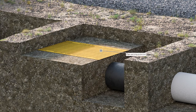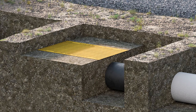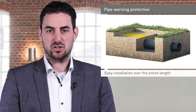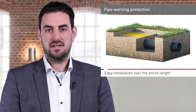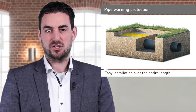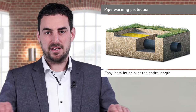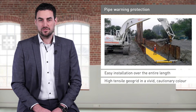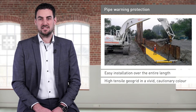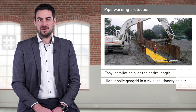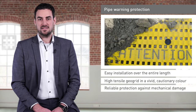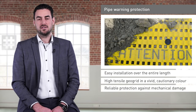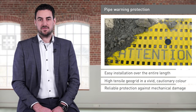Moving on to the possibility of installing a pipe warning protection, let's leave the pipeline trench. Pipe warning protection is installed in the course of closing the pipeline trench at an appropriate distance from the pipe crown over the entire length of the pipeline. The use of a high tensile and thus very resistant vivid color geogrid reliably protects the pipeline against accidental damage, for example during construction work above the pipe.